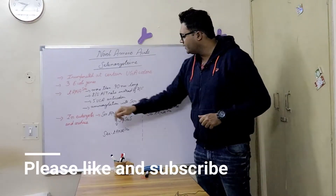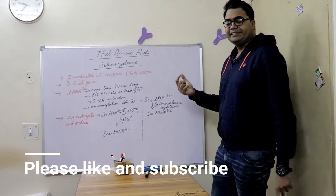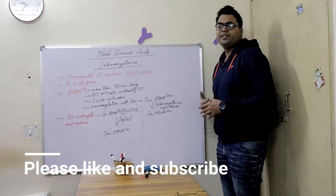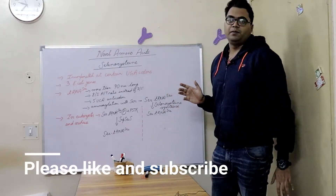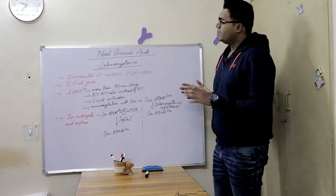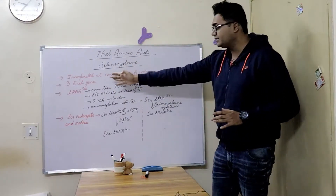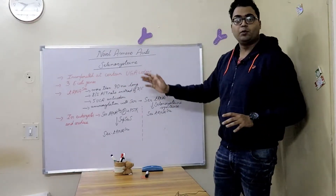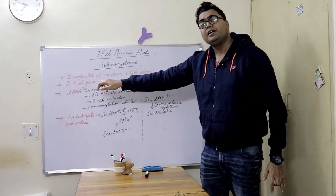So what kind of tRNA is this? The tRNA responsible for incorporation of selenocysteine is longer than 90 nucleotides. In my previous video I mentioned that tRNA molecules are typically 70 to 90 nucleotides long, mainly 76 nucleotides, with an upper limit of 90. But this tRNA surpasses that upper limit.